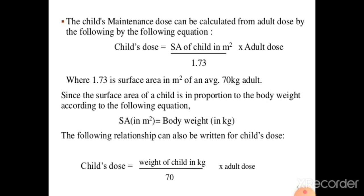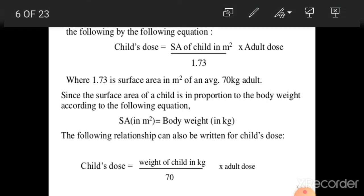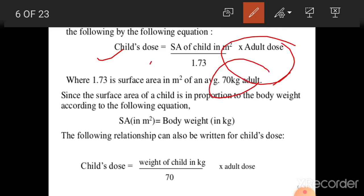The child's maintenance dose can be calculated using the following formula. Maintenance dose is the dose required to maintain the therapeutic effect throughout therapy. The child's dose is equal to the surface area of the child in meter square divided by 1.73, multiplied by the adult dose, where 1.73 is the surface area in meter square of an average 70 kg adult.